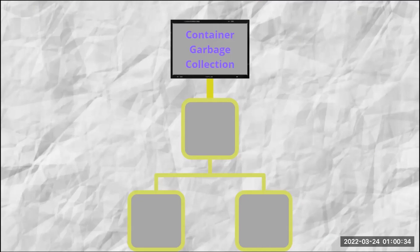As an administrator, you can use OpenShift Container Platform to ensure that your nodes are running efficiently by freeing up resources through garbage collection. Container garbage collection can be performed using eviction threshold. When eviction thresholds are set for garbage collection and thresholds are met for parameters like eviction soft or eviction hard, the node takes the appropriate action.